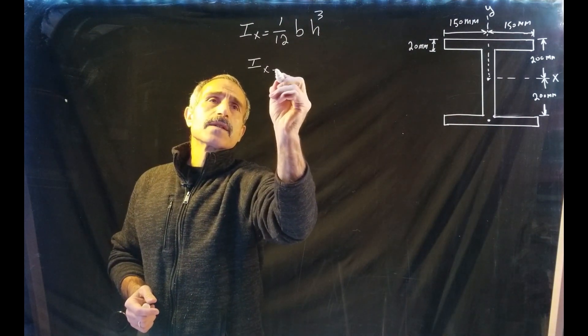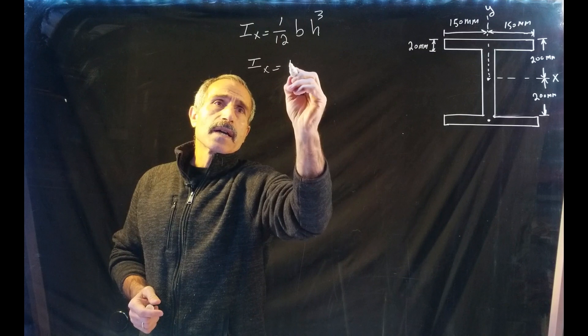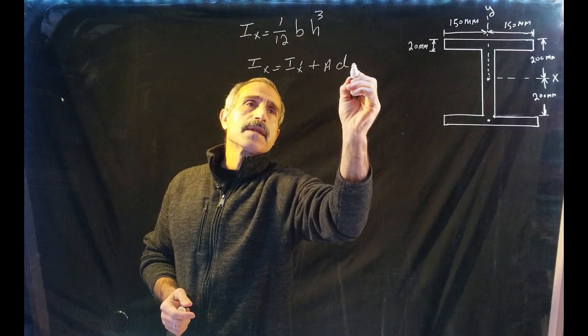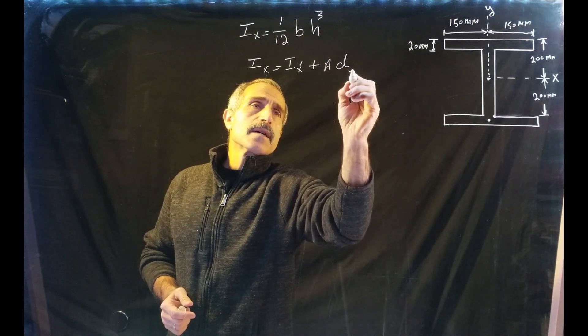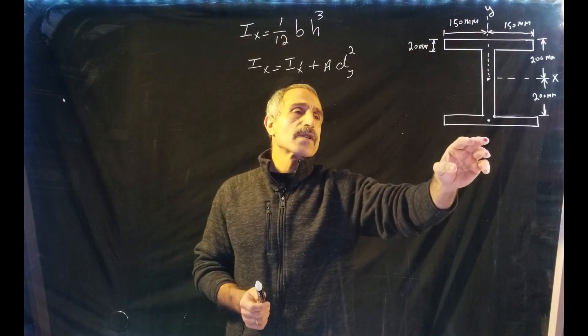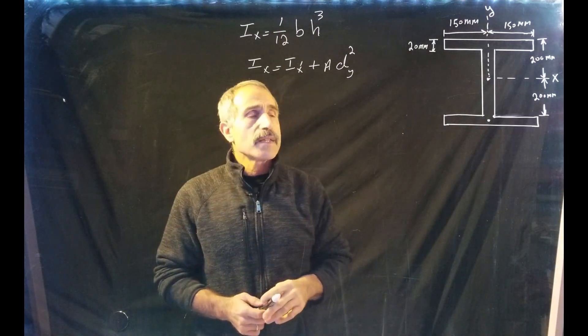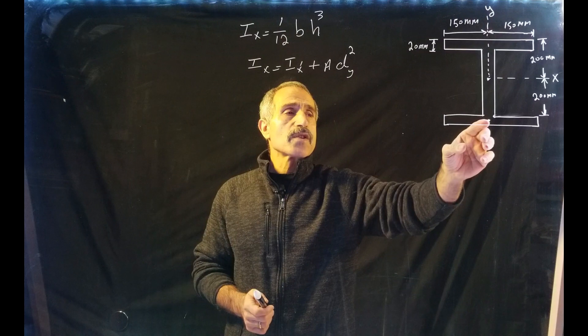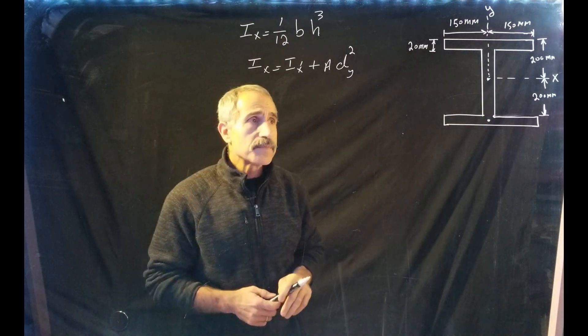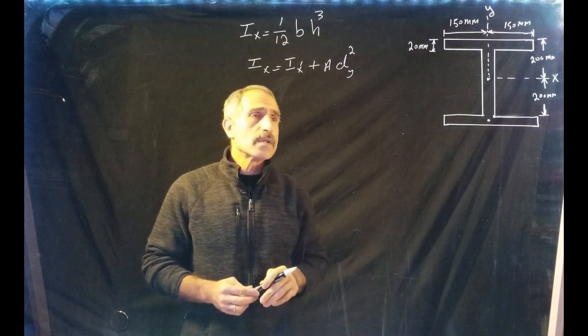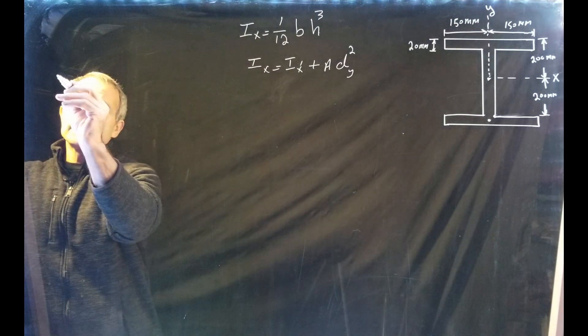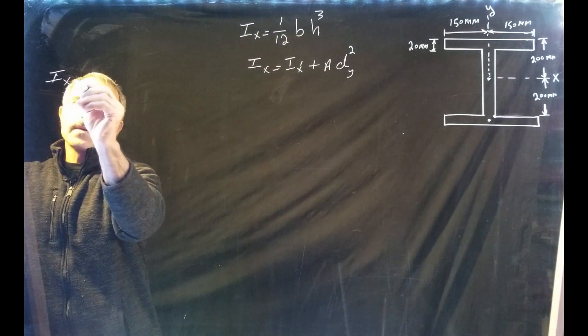It will become Ix equal to Ix prime plus area times d squared. Now for Ix, the d will be in the y direction. That means the distance between the centroid of the first shape and the second shape in the y direction. So let's just do this problem and calculate Ix.